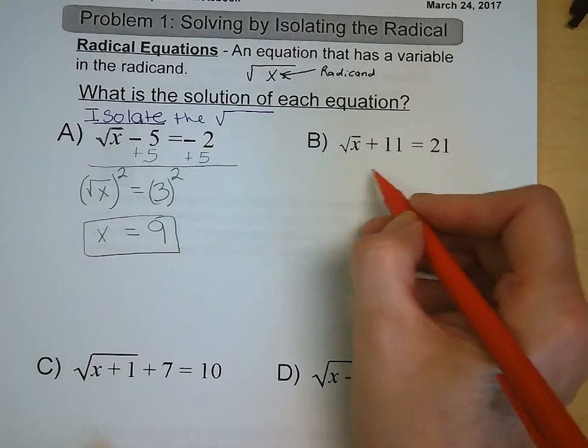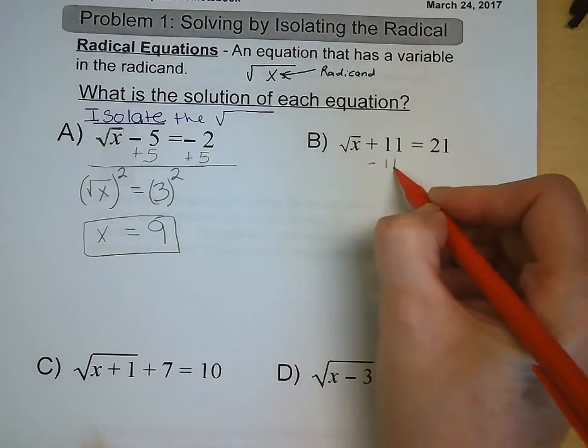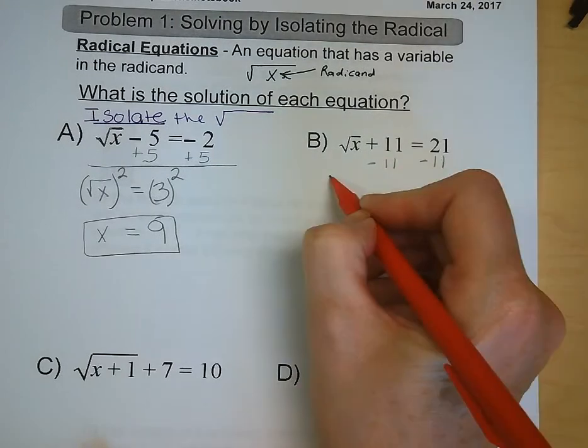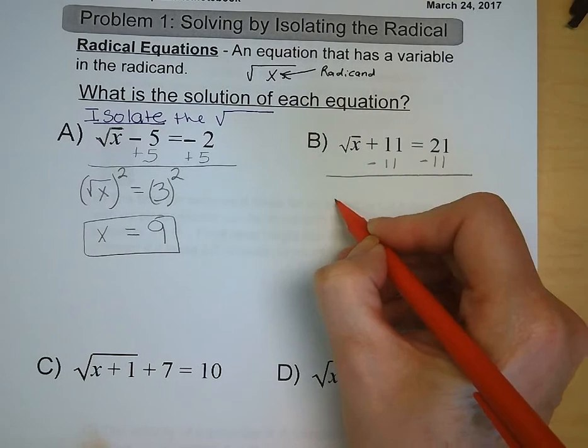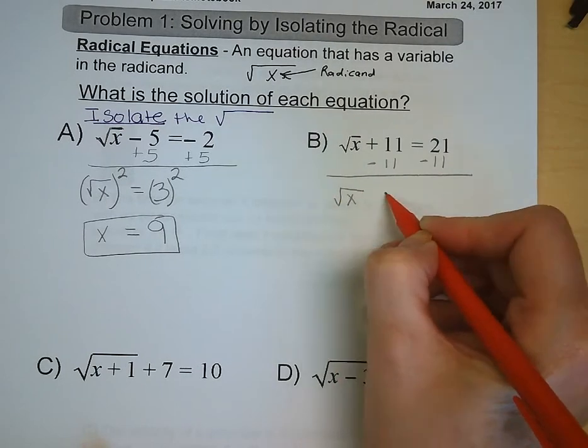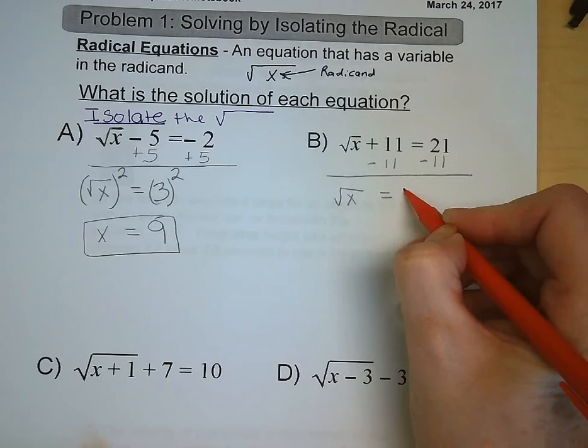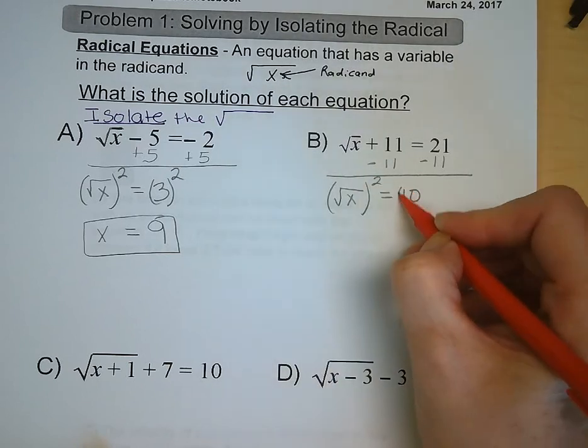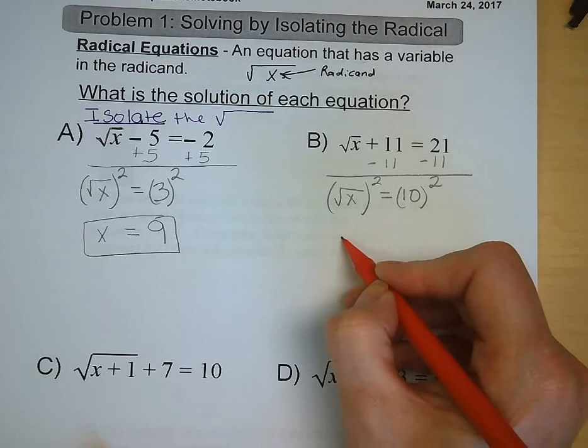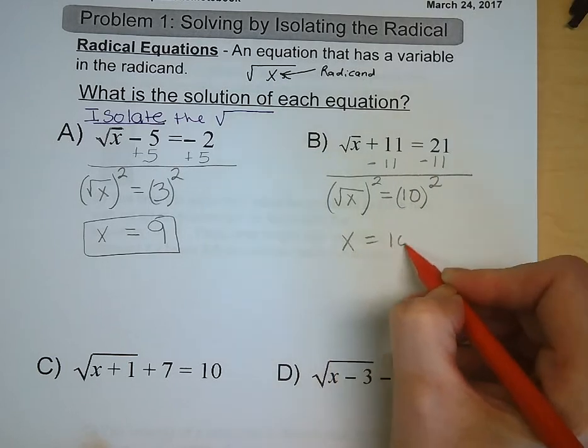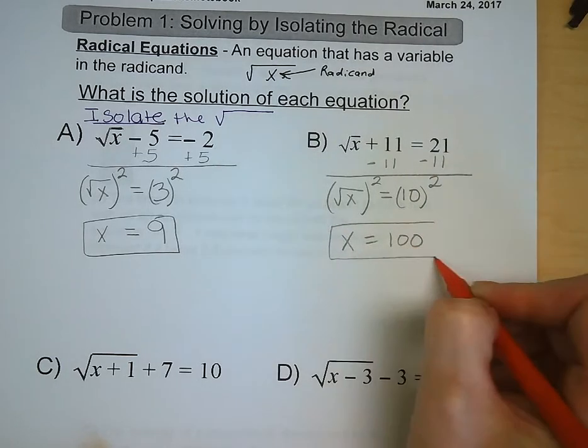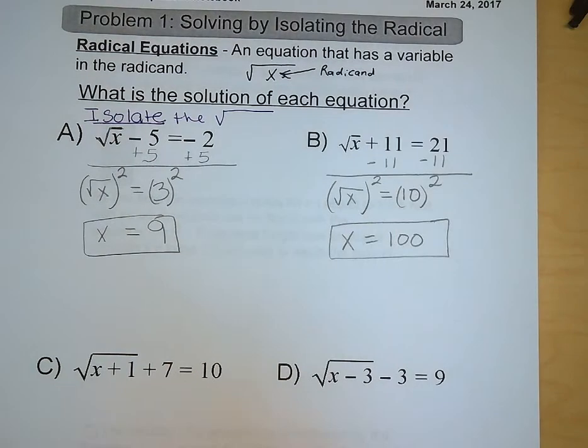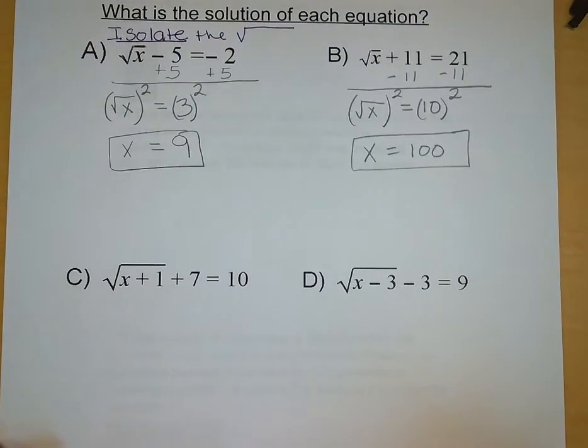Letter B. We've got the square root of x plus 11 is equal to 21. So we subtract 11 from both sides and the square root of x is equal to 10. Square it, and x is equal to 100. Let's make sure we go step by step.